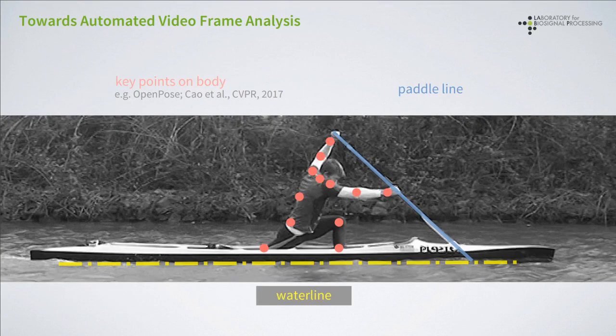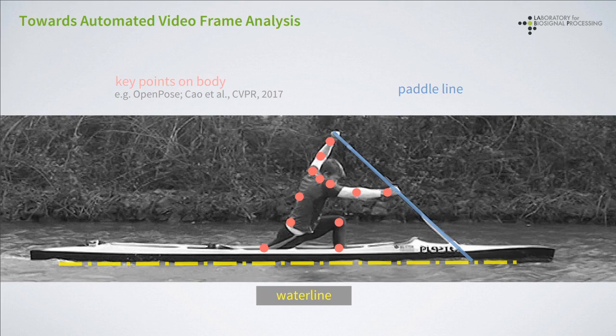In order to determine these desired parameters, one needs several components, which are depicted on this slide. First, one needs key points on the body, and one could employ key point detection methods such as OpenPose to detect them. We already did some work on applying and optimizing pose estimation to this problem, which I will briefly outline at the end of this talk. The second component is the line of the paddle, and the method I present here for waterline detection can also be adapted to this problem. The third component is the waterline, and its detection from images is the subject of the current work.